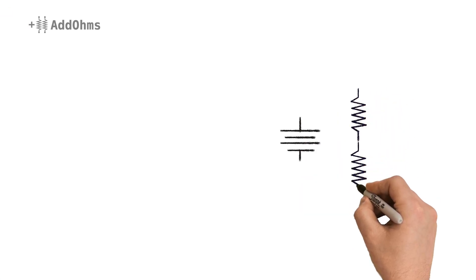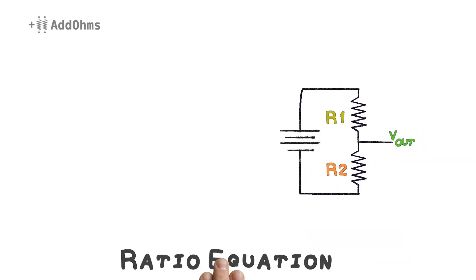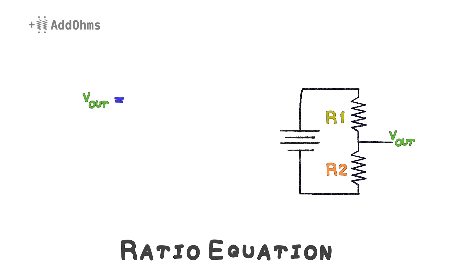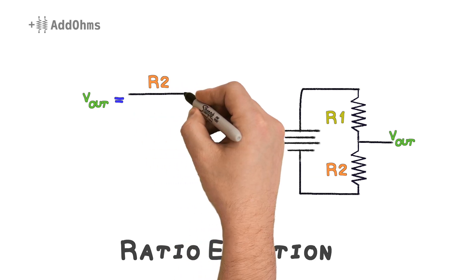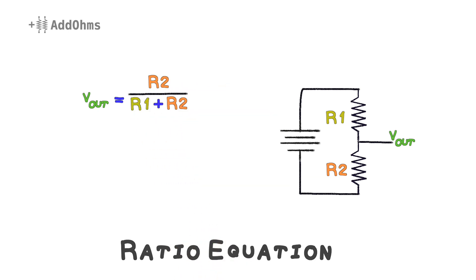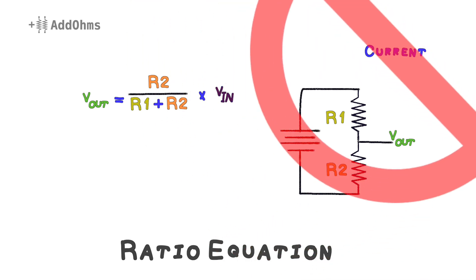How would you like a faster way to calculate the voltage divider? Check this out. Vout is equal to R2 divided by R1 plus R2 times Vin. There is no need to calculate the currents in this case.